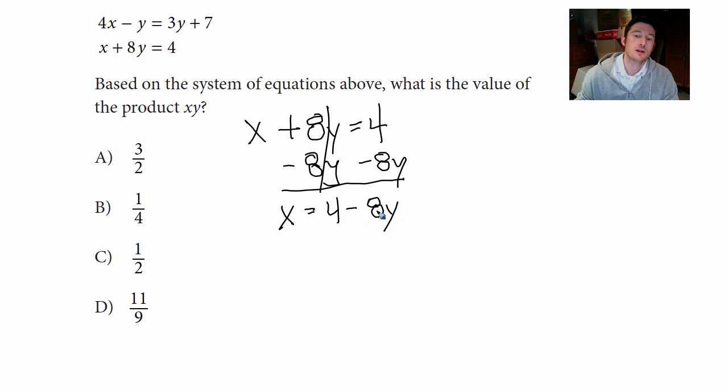X equals 4 minus 8Y. All right, so where do I want to plug this into? I want to take this information and put it into the top equation, especially right here where there's an X. So I can put this information in. So it's going to be 4 times 4 minus 8Y. And I got to be careful to write everything else that was there. Minus Y equals 3Y plus 7.